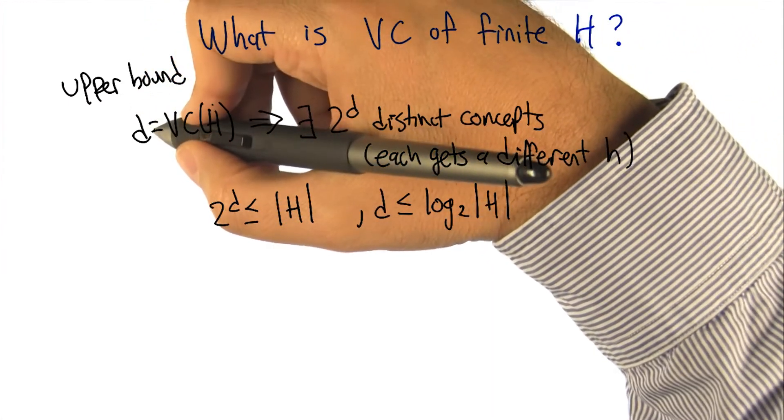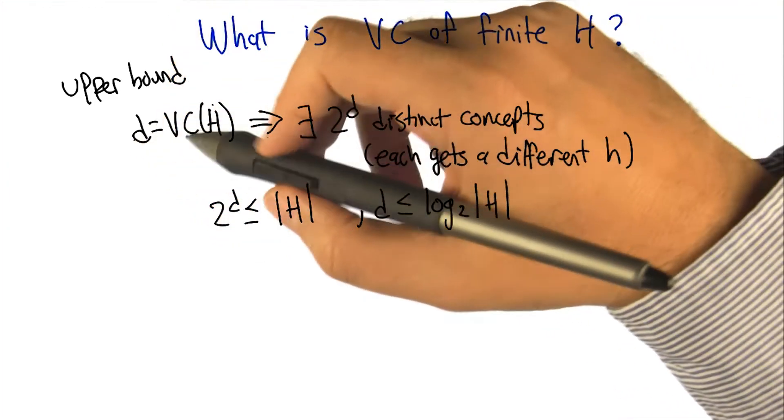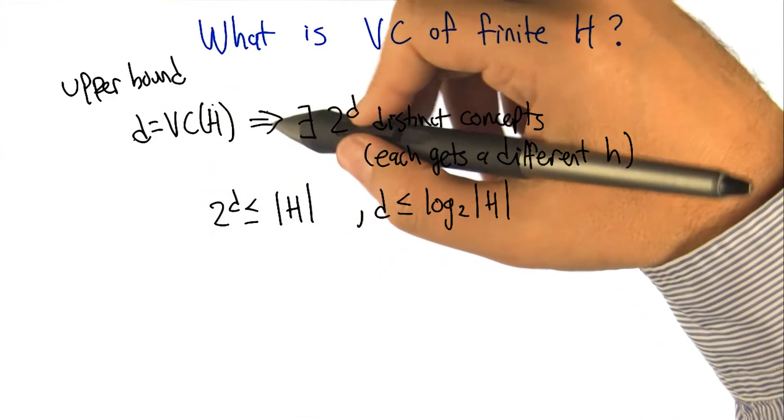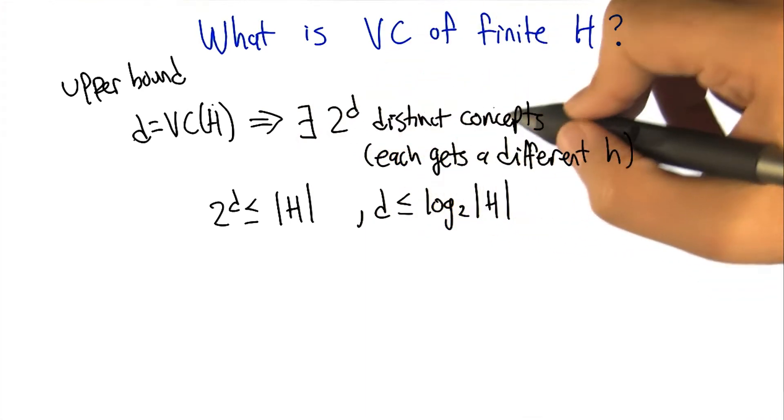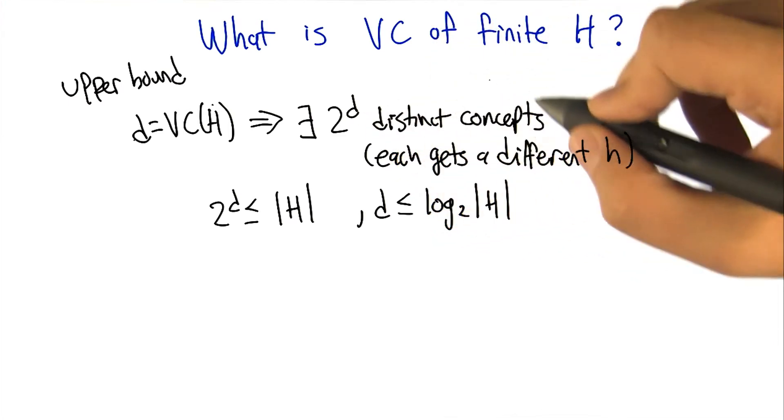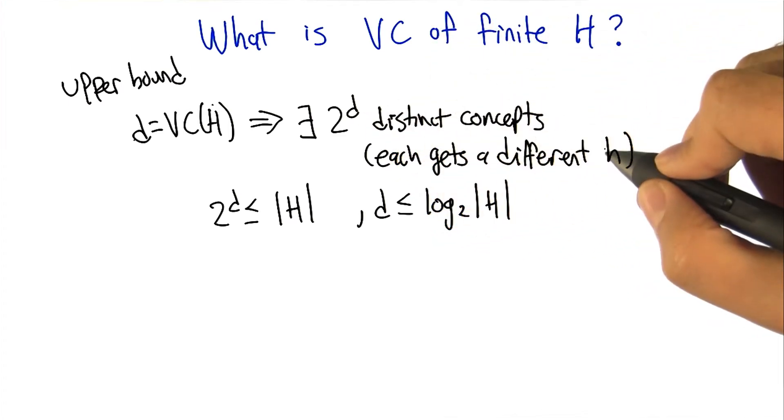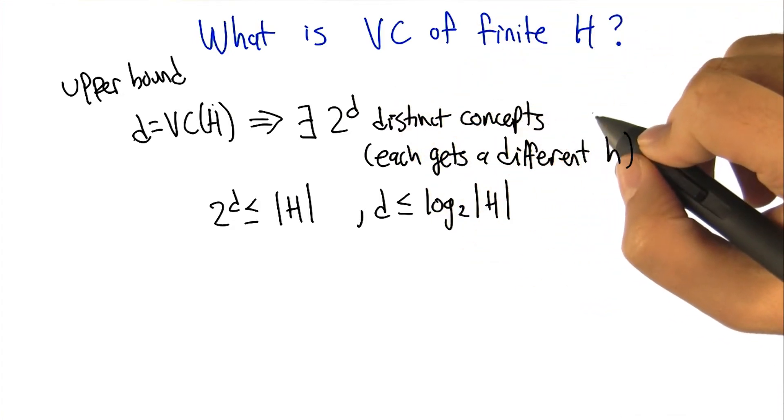Let's imagine that the VC dimension of H is some number D. The thing to realize from that is that implies there has to be at least 2 to the D distinct concepts. Why is that? It's because each of the 2 to the D different labelings is going to be captured by a distinct hypothesis in the class, because we can't use the same hypothesis to get two different labelings.